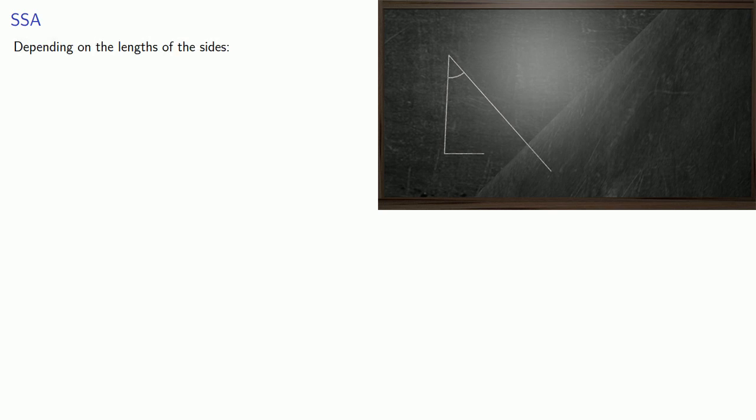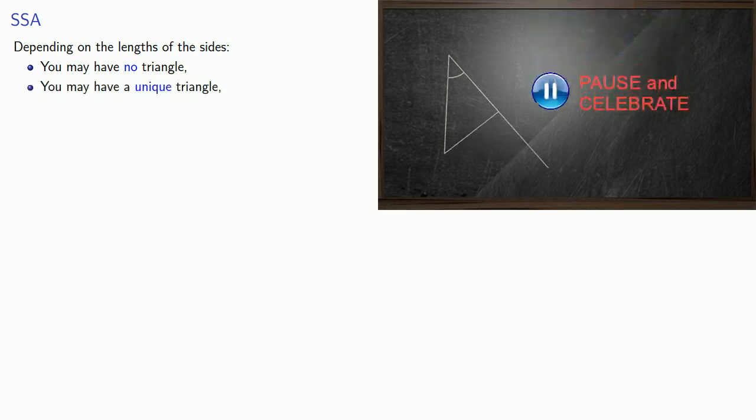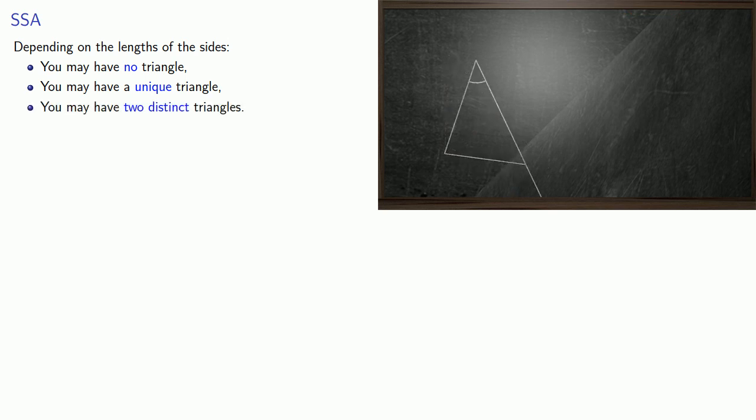Now if the other known side is too short, we can't form a triangle. Or if the other side has just the right length, you may have a unique triangle. Or you may have two distinct triangles. And what will determine this is whether or not you have 0, 1, or 2 solutions for the length of the third side.